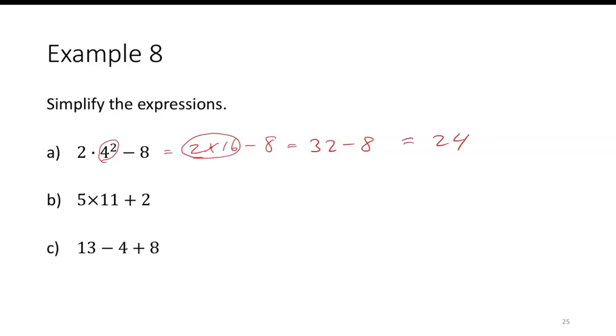For part B, 5 times 11 plus 2. I would multiply first. 5 times 11 is 55, plus 2 is 57. And then C, there is subtraction and addition. For those, I just go left to right. So I would start with the 13 minus 4. So 13 minus 4 is 9, and 9 plus 8 is 17.